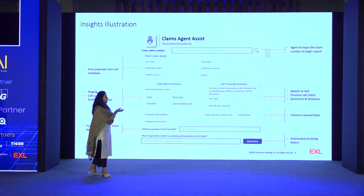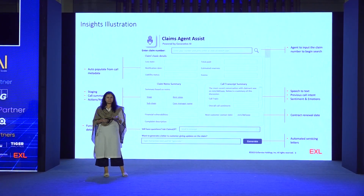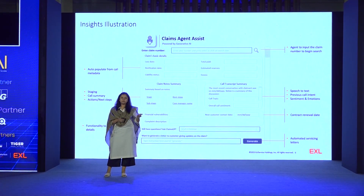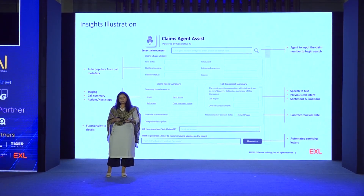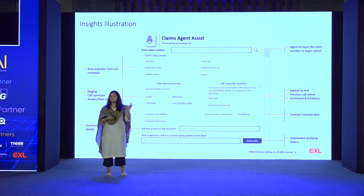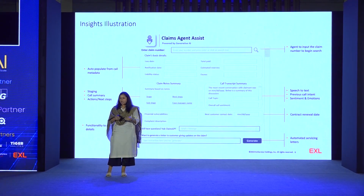This is the claim agent assist solution we developed. In an actual inquiry center scenario, agents get multiple calls from customers requesting services, raising concerns and complaints. In the current scenario, agents have to look into multiple platforms, gather information, and then service the customer. Instead, we provide a single-page solution where they can deep dive into any claim at any level, at any given point, and assist customers quickly and efficiently.